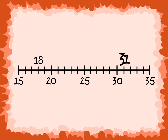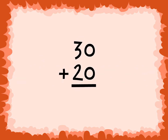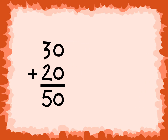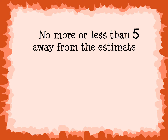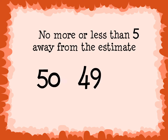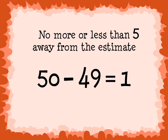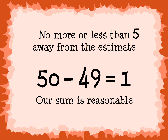We can also look at a number line to find the closest 10. The closest 10 to 18 is 20, and the closest 10 to 31 is 30. Now we can easily use mental math to find the estimated sum. 50 is our estimated sum, because 30 plus 20 equals 50. Now we can solve for the exact sum: 31 plus 18 is 49. To check if our exact sum is reasonable, it needs to be no more than 5 away from the estimate, or no less than 5 away from the estimate. Our exact sum is only 1 less than the estimated sum, so our sum is reasonable.